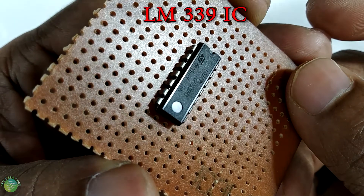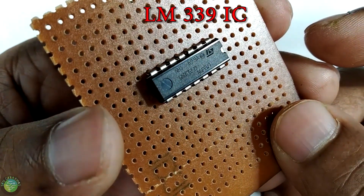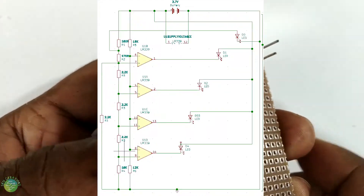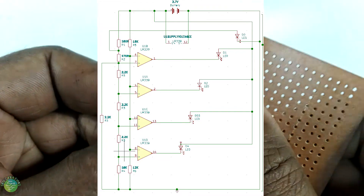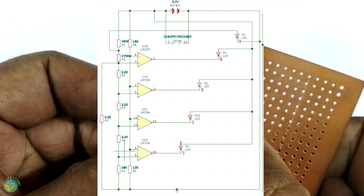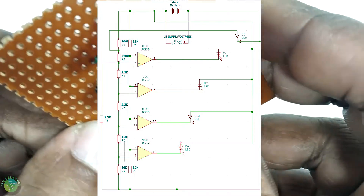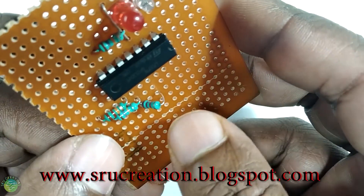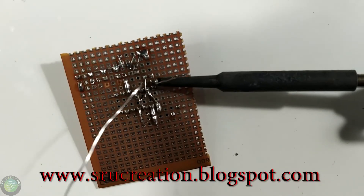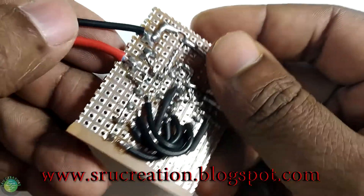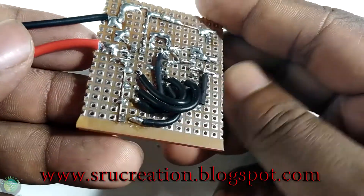Now we have 4 comparators. We have a new resistor for the design and working. Here's the link in the description.